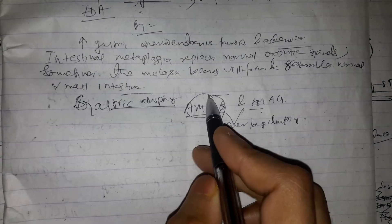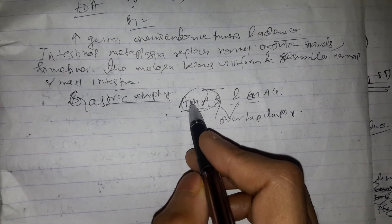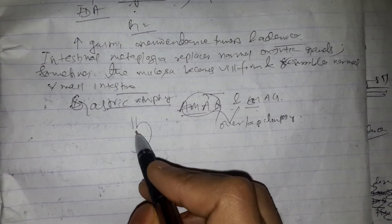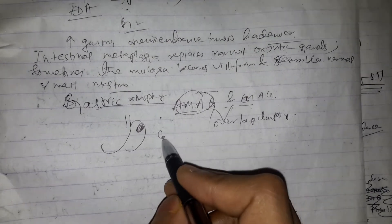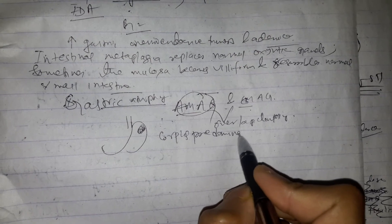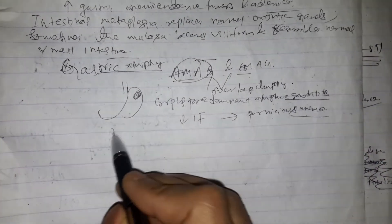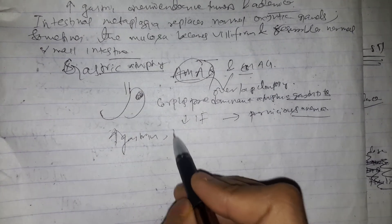Autoimmune metaplastic atrophic gastritis results in replacement of the normal oxyntic mucosa in the gastric corpus by atrophic and metaplastic mucosa, leading to corpus-predominant atrophic gastritis with reduced or absent acid and pepsin production, and loss of intrinsic factor, which may progress to pernicious anemia. Laboratory abnormalities include hypergastrinemia, iron deficiency anemia, antibodies to parietal cells and intrinsic factor, and vitamin B12 deficiency.